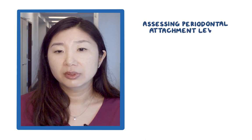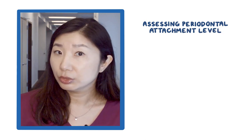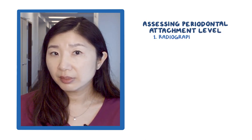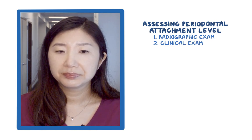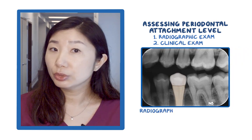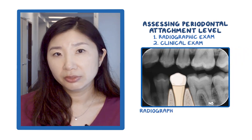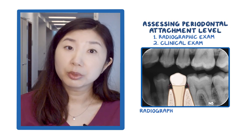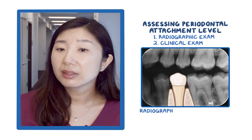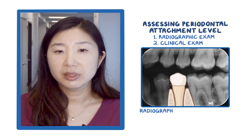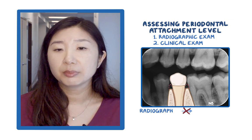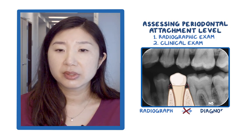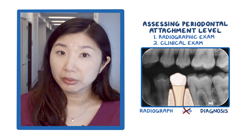There are two ways to assess periodontal attachment levels around the tooth: radiographic examination and clinical examination. A radiograph will show you the tooth, alveolar bone, and the PDL or PDL space, but not the soft tissue attachment. Therefore, you cannot make a definitive periodontal diagnosis by means of a radiograph alone.